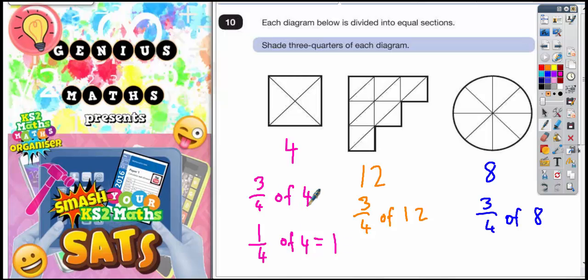So 3 quarters of 4 must be 3 lots of this 1. Well 3 lots of 1 is 3. So 3 quarters of 4 is 3. So you need to shade in 3 sections here. It doesn't matter which 3 sections as long as you shade in 3. So I'm going to go for that one, that one, and that one. There's my 3 sections. So there's my 3 quarters of the 4 sections.